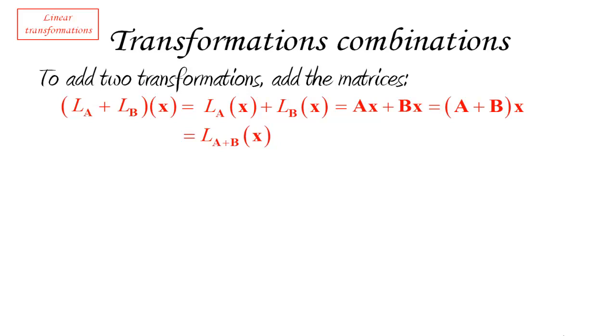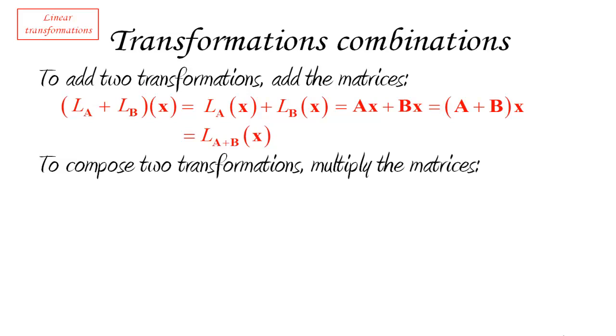So doing A times B times X, what does that exactly mean? However, what we can do with that matrix multiplication is use it to check a different kind of combination, something that we also saw for functions, and that is composition. Just like we used to compose two functions, two regular functions, we can compose two transformations.